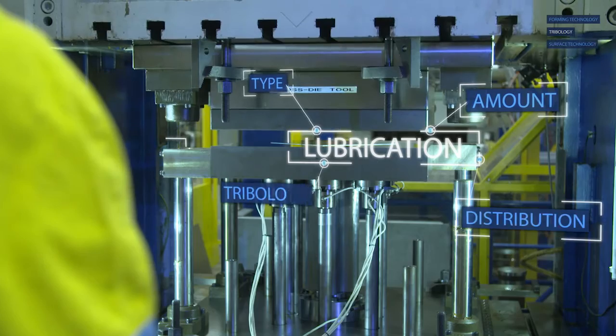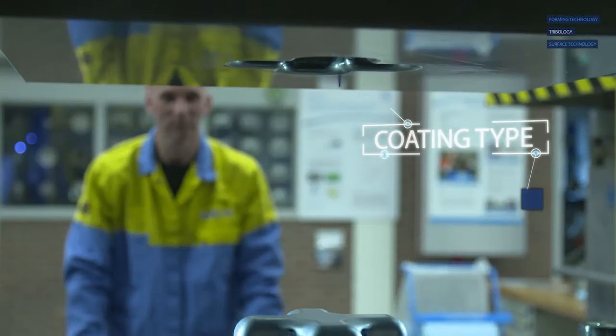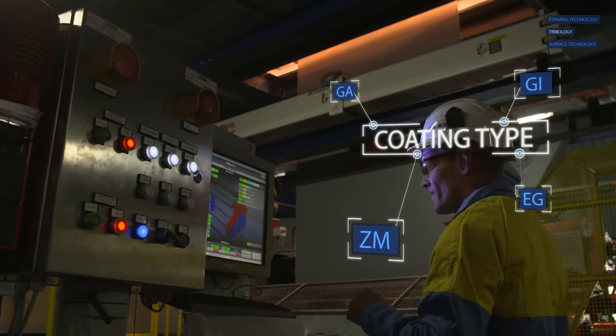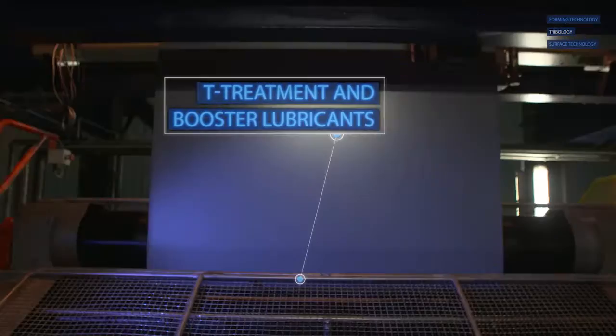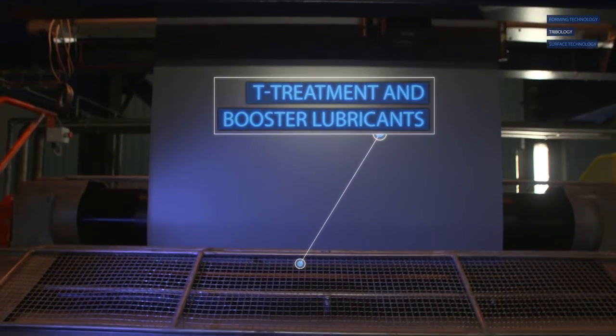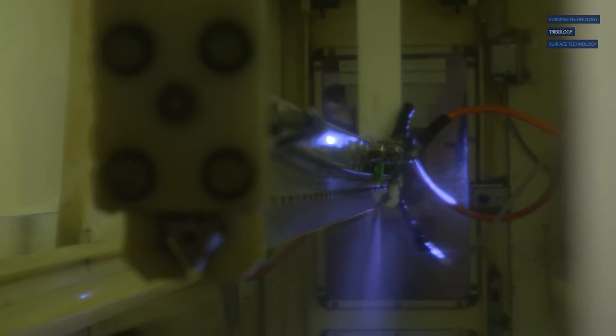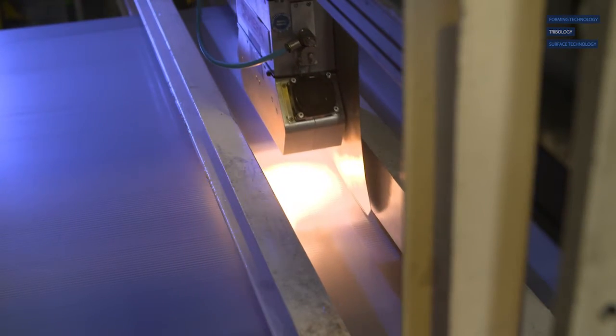We accurately control the friction properties to ensure stable operating windows during pressing. We also develop special lubrication systems that guarantee excellent press shop performance. These systems reduce and stabilize friction and minimize surface contact, zinc abrasion, tool pollution and galling.